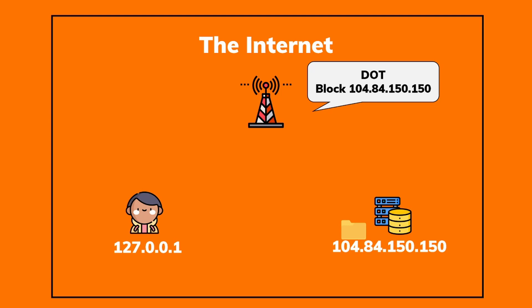The app will not get any data from those blocked IP addresses. And if the ISP with my IP address receives any request to the blocked IP address, it will stop connecting to that. So you cannot access any data from that app. This is also why you cannot access the official site of the app.